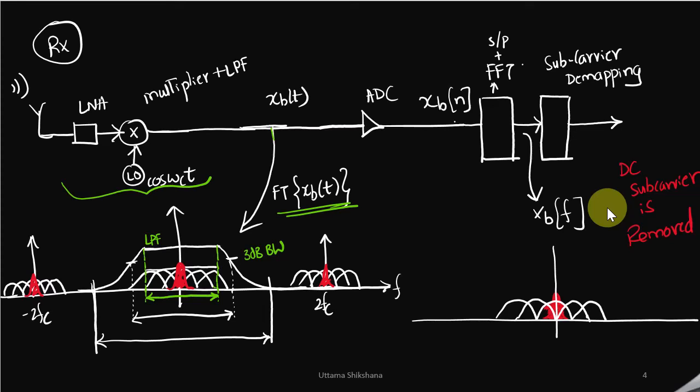At this point we will have the estimated baseband signal. If you take the frequency response by taking the Fourier transform, it would look like this. There is a high frequency component and we are seeing our OFDM baseband signal as well. With the low pass filter we eliminate the high frequency component.